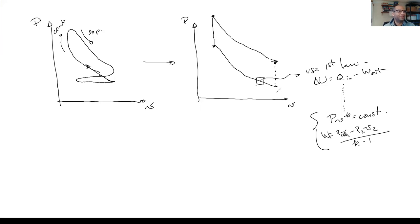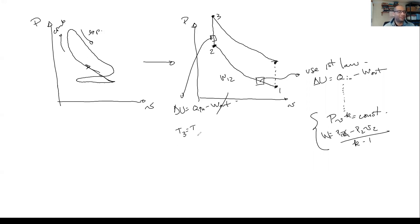We linked states one and two to get the work from one to two. For combustion going from two to three, we wrote the first law — change in internal energy equals Q-in minus work out — noted there's no work at constant volume, and found T3 equals T2 plus Q-in over Cv. Using the ideal gas relation, P3 over P2 equals T3 over T2, we linked states two and three. We kept doing this from state to state and then reassembled all states to get the efficiency of the ideal cycle.